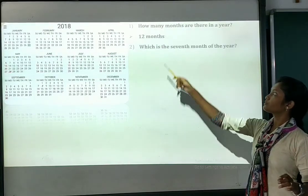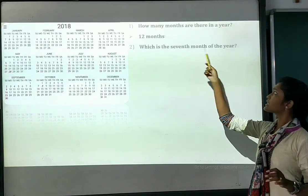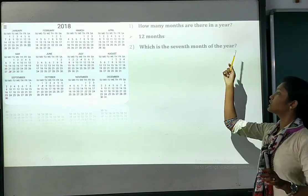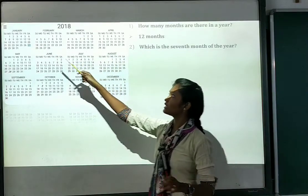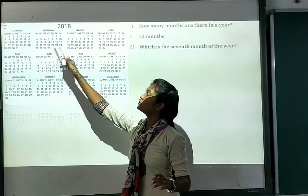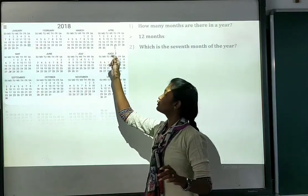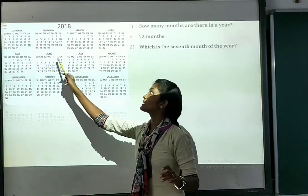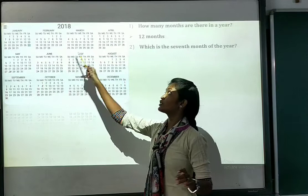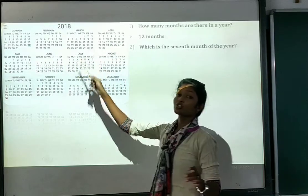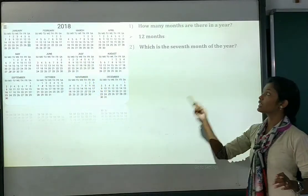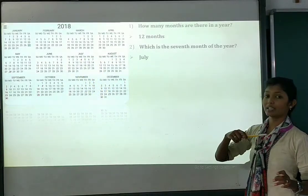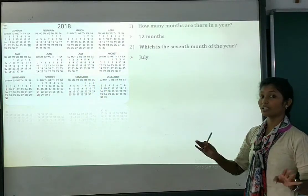Number 2: which is the 7th month of the year? Let's count 1, 2, 3, 4, 5, 6 and 7 — July. July is the 7th month. So you will write the answer: July.